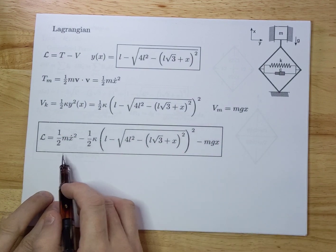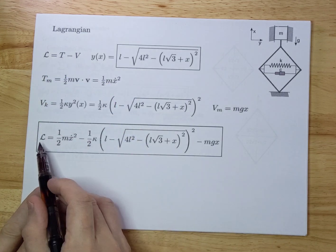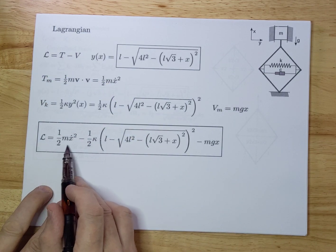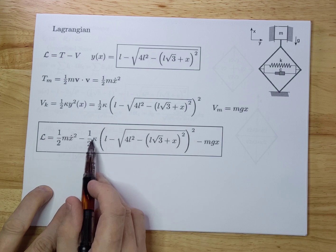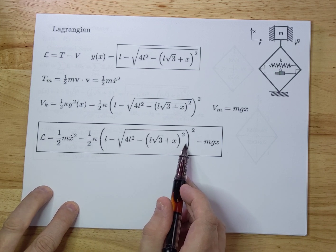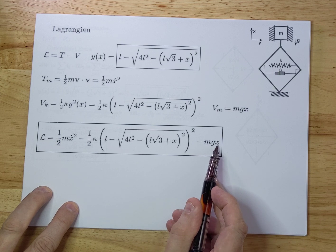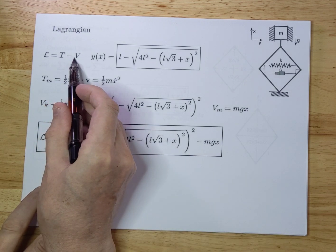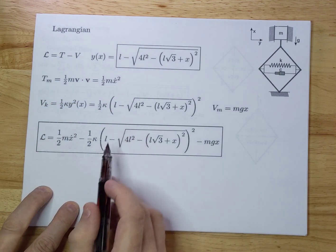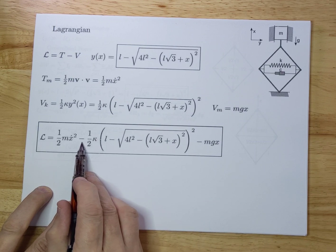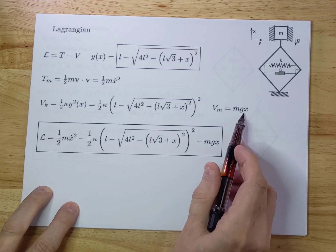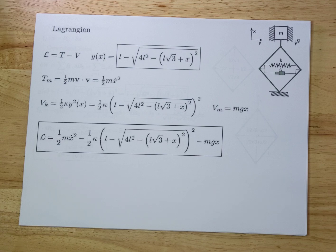Now we are in a position to add those up. We come to a Lagrangian here, which is a half mX dot squared minus a half k times Y(X) squared minus mgx. You do T minus V, and therefore you get the minus signs here. Minus here, minus there, even though those are plus.